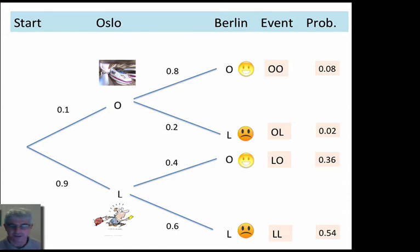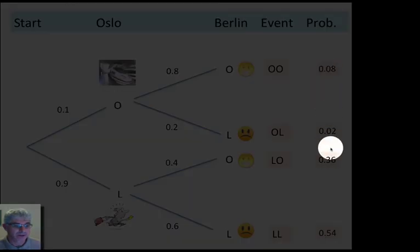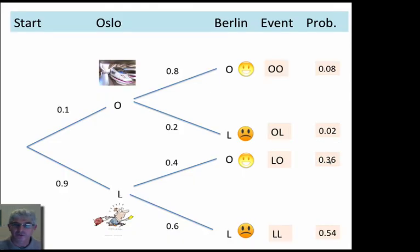And now you can see how amazingly easy it is to answer almost any question they give you about the probability of some mixture of events. So, the first question I asked was, what's the probability that you arrive in time for the concert? Well, that's just the two smiley faces, isn't it? The two happy smiley faces, the OO and the LO, anything that had you O on time to Berlin. So, what do we do with them? We add these two probabilities, 0.08 plus 0.36, giving us 0.44. So, a probability of 0.44 that you'll get to your concert.